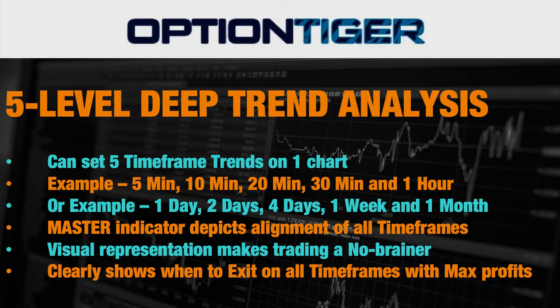The multi time frame trend indicator will give you five levels of deep trend analysis, so on every chart you can set five time frame trends. For example, you'll have a five-minute trend, a ten-minute trend, a twenty-minute trend, a thirty-minute trend, and a one-hour trend. Or as another example, you can have a one-day trend, two days, four days, one week, and one month. You can go further than that or in between, and there is a master indicator also available on the same chart.